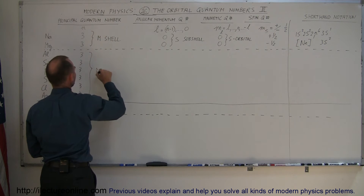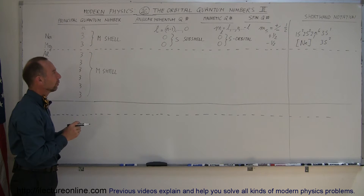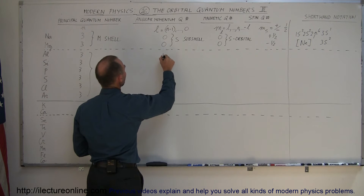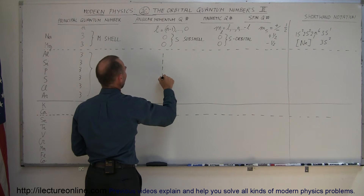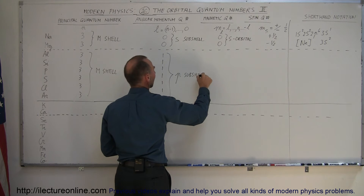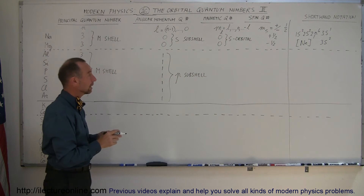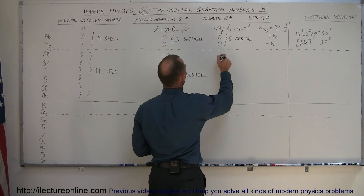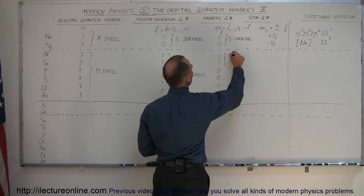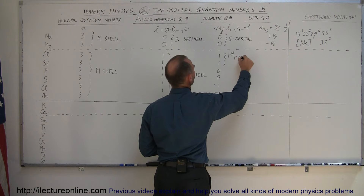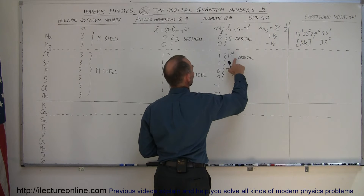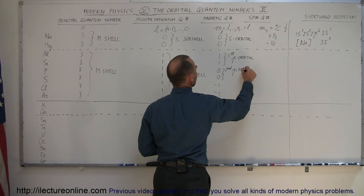Since the S-orbital is now filled, we can only place electrons in the P-orbitals next, so the angular momentum quantum number is now 1, which corresponds to the P-subshell. In the P-subshell we have three P-orbitals, each containing up to two electrons. So the magnetic quantum numbers are +1, 0, and -1, corresponding to the first, second, and third P-orbital in the third energy level.